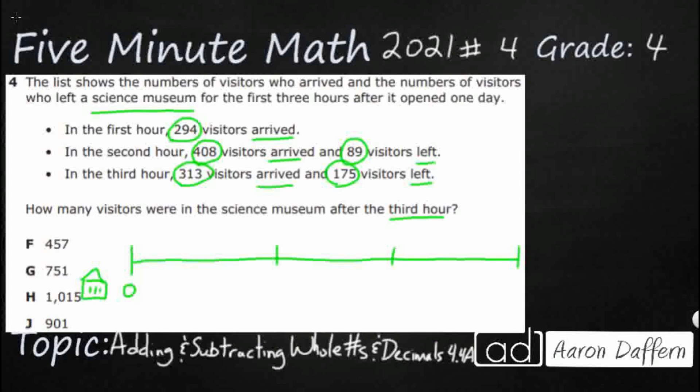And then after my first hour, it looks like I've got plus 294. So I've got 294 people that arrive. So I guess at the end of my first hour, I've got 294 people. Things get tricky at my second hour because I get another 408, but then I lose 89. I'm going to put that up here. So up at the top is where my people go home. And then on my third hour, I've got another 313 coming and then 175 leaving. So it looks like I've got more people coming than going every single hour till the end of the day. And then my question is, how many people are there after that?